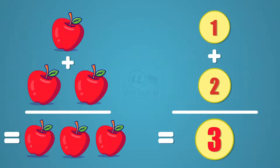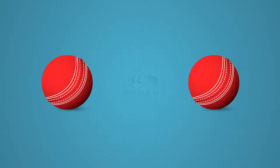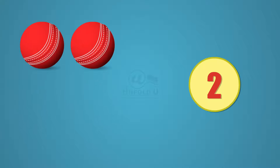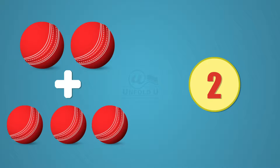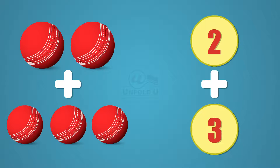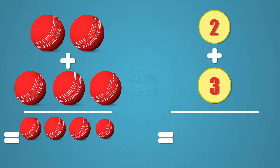Let's start counting the next example. One, two — so here we have two balls, plus one, two, three — plus three balls. Now we have to find the total number of balls. Let's count again: one, two, three, four, and five. Totally we have five balls. Two plus three gives five.